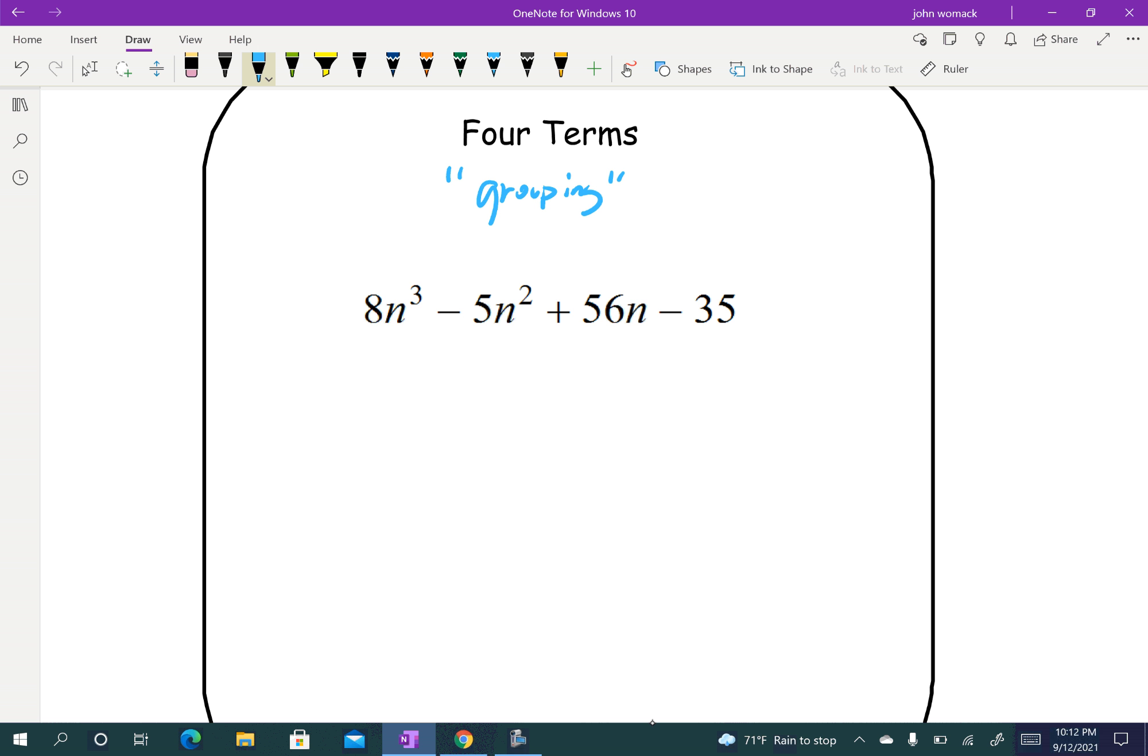So with grouping, I look for a common factor between all four and there's not one. So instead I just group the first two and the last two together. Be careful with this one. 8 and 5 does not have a common factor, but they both have n's. So I could take out an n squared, that leaves me with 8n minus 5. And then 56 and 35, I could take out a 7, that would leave me with 8n minus 5. For factoring by grouping to work, these two have to match up, which they do. So now I take that 8n minus 5 and I put it out in front, and that leaves me with n squared plus 7. Make sure you remember how to do four terms. We have that video back on Canvas where you can go through those examples of grouping.